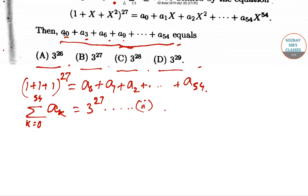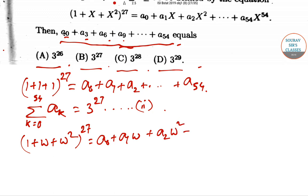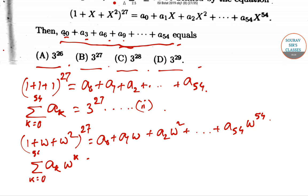Now putting x = ω in equation 1: (1 + ω + ω²)^27 = a₀ + a₁ω + a₂ω² + ... So the summation of aₖ·ωᵏ for k = 0 to 54 equals zero, since 1 + ω + ω² = 0. This is equation number 3.